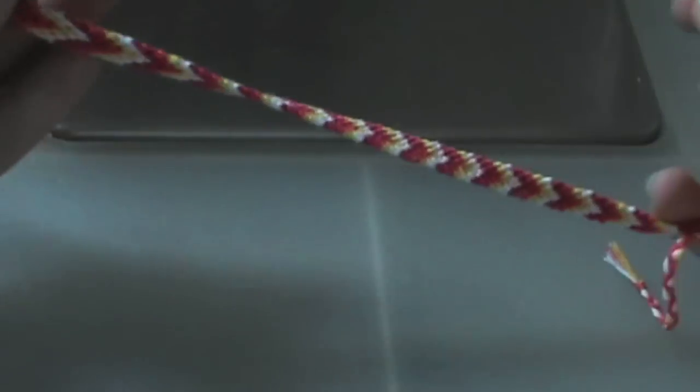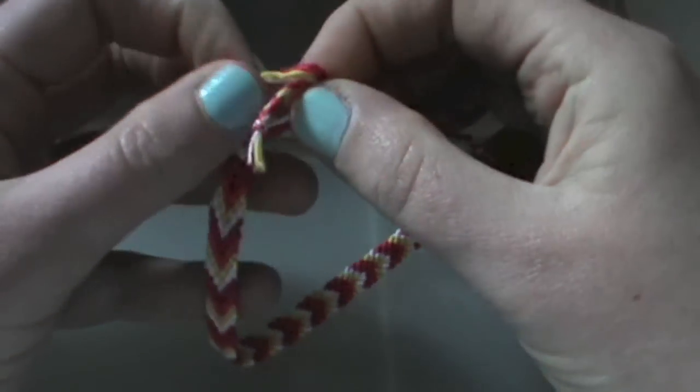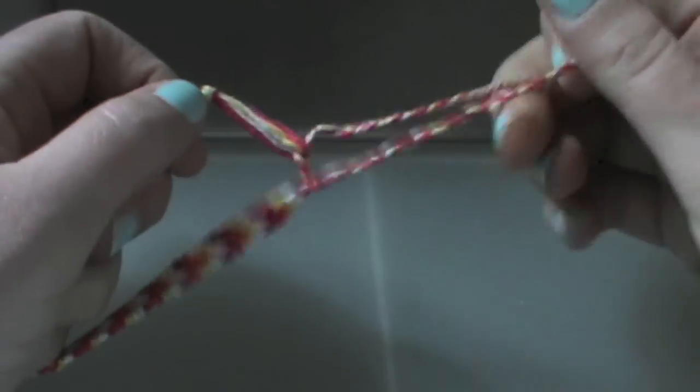And tie those in two knots. And then you have two sort of loose ends that you can use to tie the bracelet to your arm.